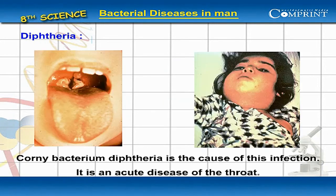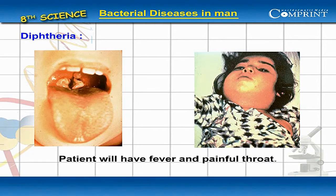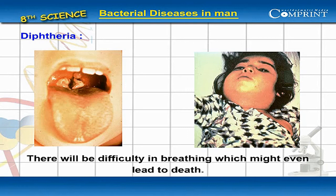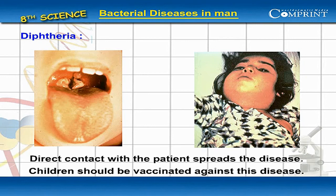Diphtheria. Corynebacterium diphtheria is the cause of this infection. It is an acute disease of the throat. Patient will have fever and painful throat. There will be difficulty in breathing which might even lead to death. Direct contact with the patient spreads the disease. Children should be vaccinated against this disease.